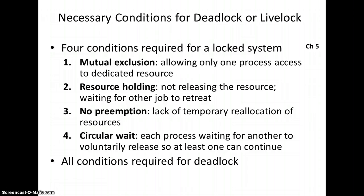Just because something's listed here doesn't mean it's bad, and I'll explain with the first one: mutual exclusion. If we have something like a printer, we want to make sure that if a process is sending stuff to a printer — if it's in the middle of writing out characters to a page — we don't want another process to start sending stuff to that printer. So only one process at a time can have access to a printer. It's a dedicated resource; only one thing can access it at a time. We do want to mutually exclude another process from accessing the printer while a process is using it. All four conditions would have to be in place for a deadlock to possibly occur.